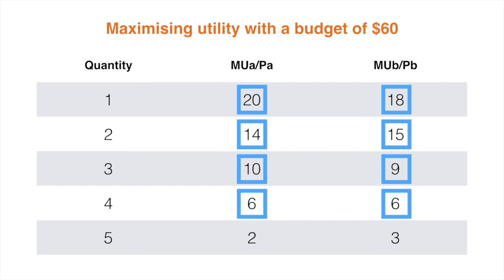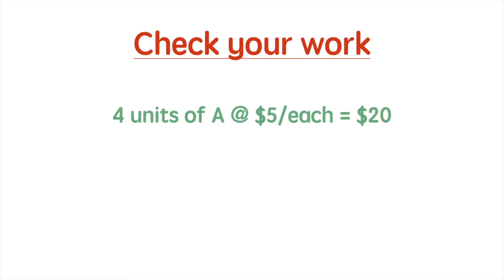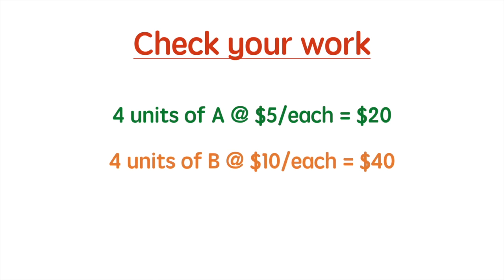Next, I will do a quick check of my work to ensure this is correct given the budget constraint. If I have $60 and purchased 4 units of A at $5 each, that is $20 gone. That leaves me with $40, and if I purchased 4 units of B at $10 each, that is the remaining $40 gone. This works out and I have maximized my utility.